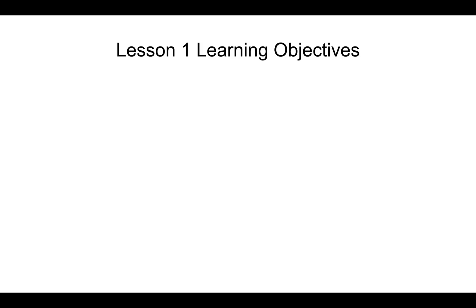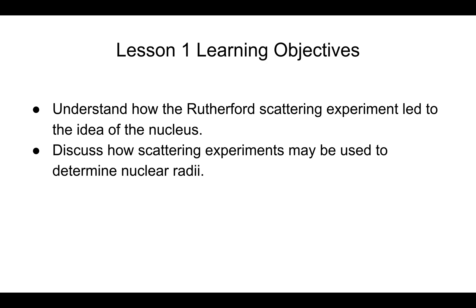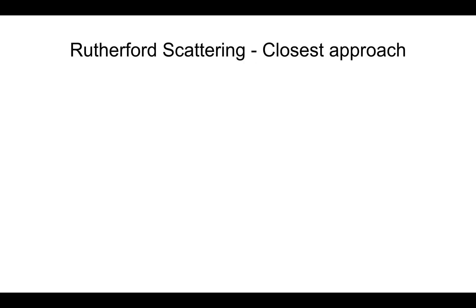Here are your learning objectives. We will split this into two lessons. By the end of this one, you will be able to understand how the Rutherford scattering experiment led to the idea of the nucleus. You will also be able to discuss how scattering experiments may be used to determine nuclear radii. And there will, of course, be some math involved. So, first, let's discuss Rutherford scattering and the important idea of the closest approach.